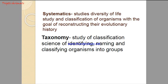To study biological classification, we need to get familiar with two terms: systematics and taxonomy. Systematics studies the diversity of life — the study and classification of organisms with the goal of reconstructing their evolutionary history. So systematics involves the various kinds of organisms, their classification, and also their evolutionary relationships among them.